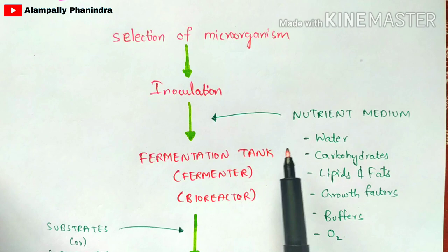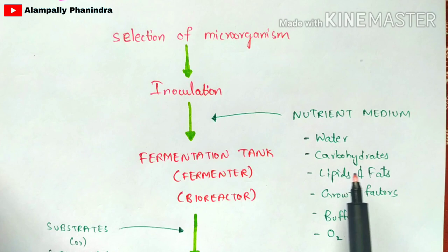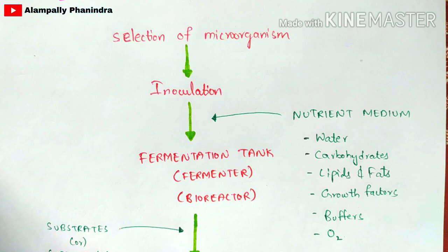After cleaning, you add the microorganisms into the fermentation tank or bioreactor, along with the nutrient medium. The nutrient medium includes water, carbohydrates, lipids and fats, growth factors, buffers, and oxygen. Oxygen is supplied through an oxygen inlet — refer to the diagram for details.